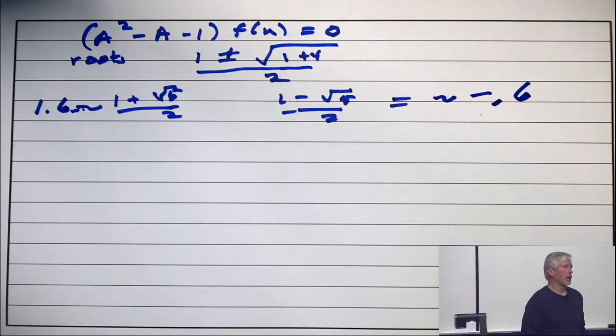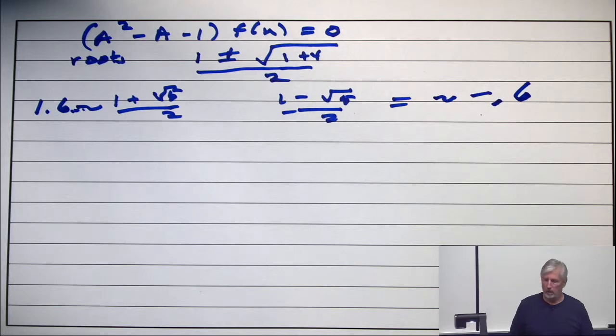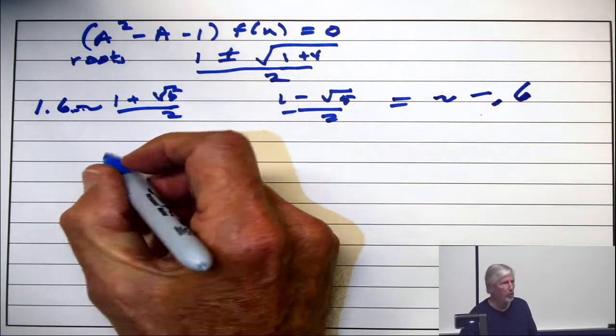So square root of 5 is like 2.2. So you subtract it, so you get about minus 1.2, divide it by 2. So this is somewhere in the vicinity of about minus 0.6. Of course, I could pull out my smartphone and get these to 7 decimals, maybe more, instantly, right? All right, now, what's the general solution?